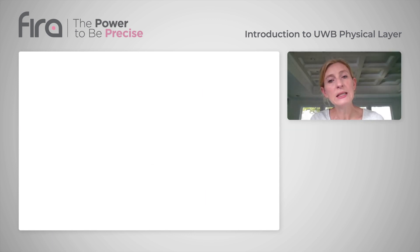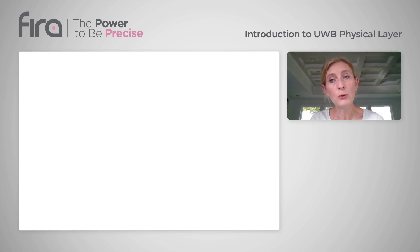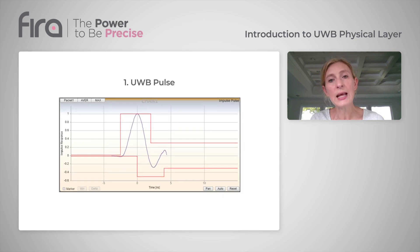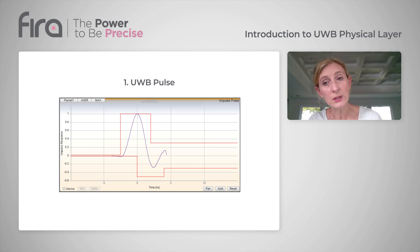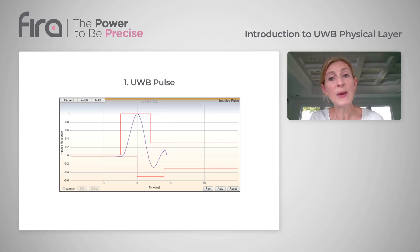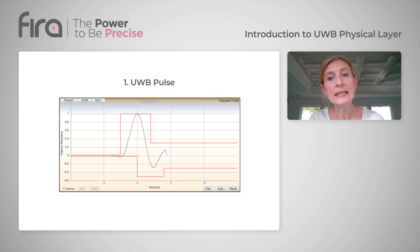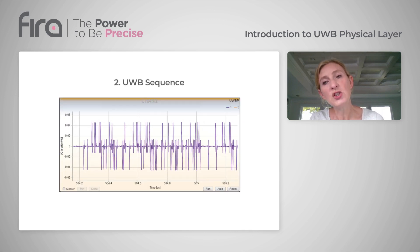UWB is different from narrowband communications technologies such as Wi-Fi or Bluetooth because it uses an impulse radio technology. The UWB pulse is very short, about two nanoseconds, and UWB transmission is achieved by sending these pulses in sequences. The pulse repetition frequency can range from tens to hundreds of megahertz.